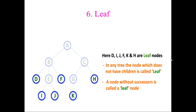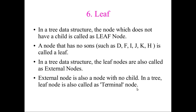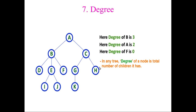What do we mean by a leaf? Simply, the nodes which don't have any children are called leaf nodes. In any tree, a node which does not have children — or without a successor — is called a leaf. Leaf nodes can also be called external nodes or terminal nodes.